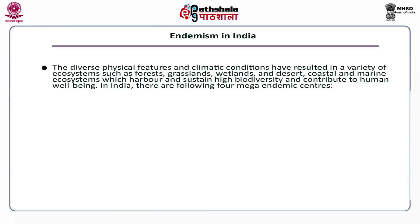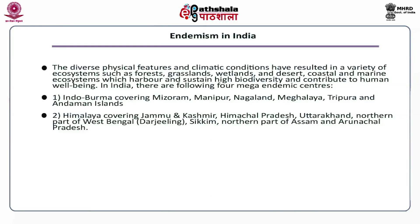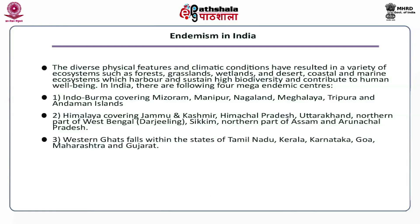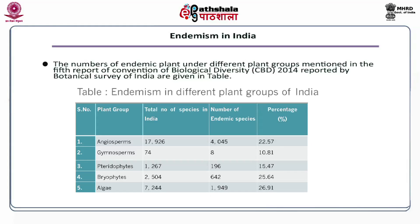In India, there are four mega endemic centers. The first is Indo-Burma, covering Mizoram, Manipur, Nagaland, Meghalaya, Tripura and Andaman Islands. The second is the Himalayas, covering Jammu and Kashmir, Himachal Pradesh, Uttarakhand, the northern part of West Bengal (Darjeeling region), Sikkim, and the northern part of Assam and Arunachal Pradesh. The third is the Western Ghats, falling within Tamil Nadu, Kerala, Karnataka, Goa, Maharashtra and Gujarat. The fourth is the Sundalands, covering the Nicobar Islands. A table gives the number of endemic plants under different plant groups as mentioned in the fifth report of the Convention on Biological Diversity 2014, reported by the Botanical Survey of India.